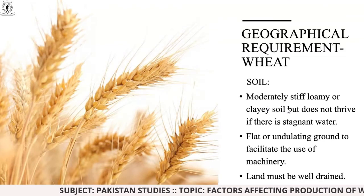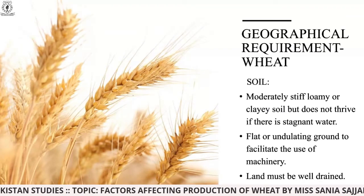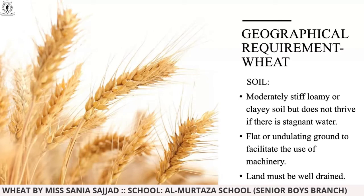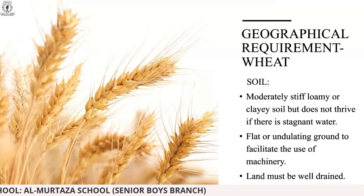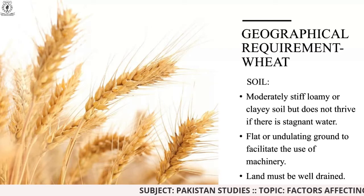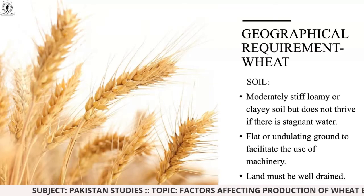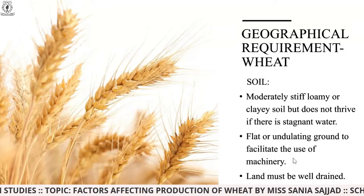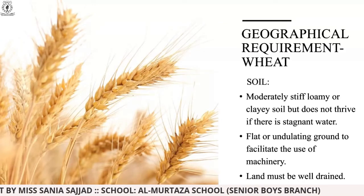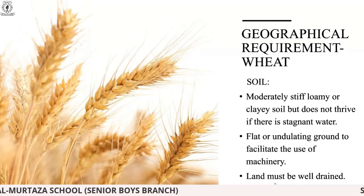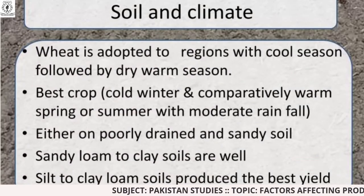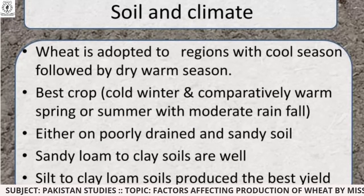Coming to the geographical requirements of wheat — soil: wheat needs a moderately stiff loamy or clay soil but does not thrive if there is stagnant water. You need a loamy or clay surface for crops to grow. The ground should be flat or gently undulating to facilitate the use of machinery. The land must also be well drained — if the land is not drained properly, you cannot grow crops.